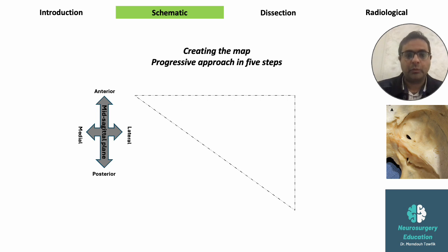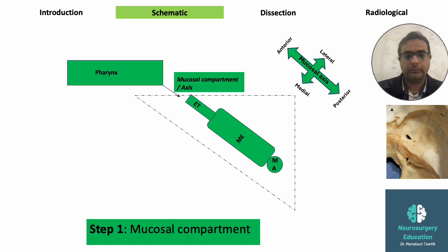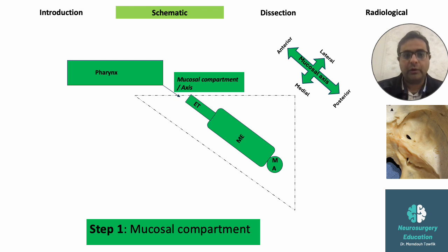Starting the map — this is a superior view of the petrous pyramid on the right side. The first compartment is the mucosal compartment. It's like an extension of the pharynx in the midline, extending posterolaterally with three parts: the Eustachian tube anteriorly, the middle ear in the middle, and the mastoid antrum posteriorly. This mucosal compartment is lined with mucosa and filled with air. It enters the petrous pyramid from the inferior surface and can be considered as an anterior-posterior axis of the pyramid.